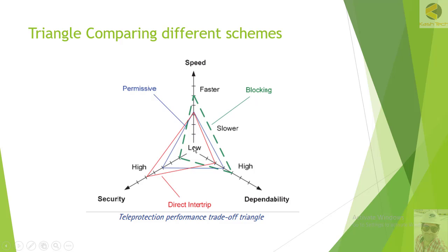As we have discussed, for the direct transfer trip scheme, the highest level of security is required. For permissive schemes, a lesser amount of security is required. For the blocking scheme, even further less security is required to implement the system. So comparing all different types of schemes, you will see three different levels as far as security is concerned.